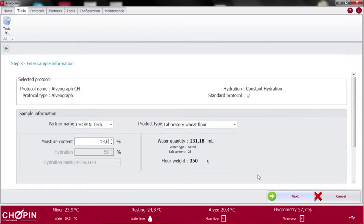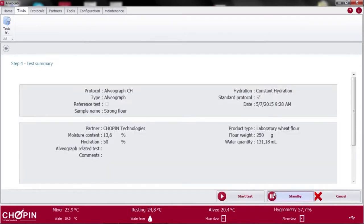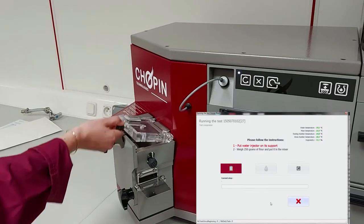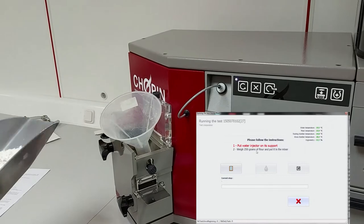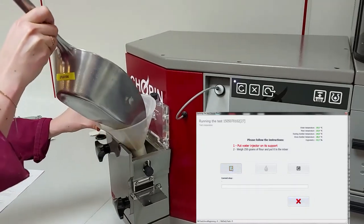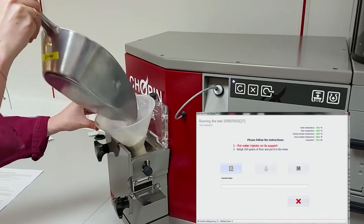Click on Next to see a summary of the configuration of your test. Click on Start Test and follow the indications given by the software. Weigh 250g of flour to an accuracy of ±0.5g. Place the hopper on top of the mixing bowl and gradually insert the flour into the mixing bowl.